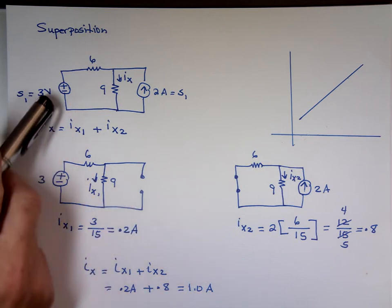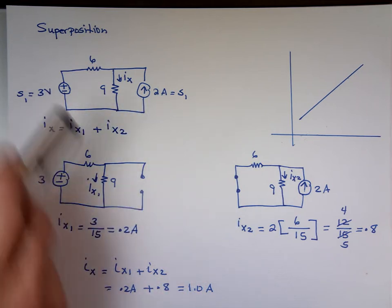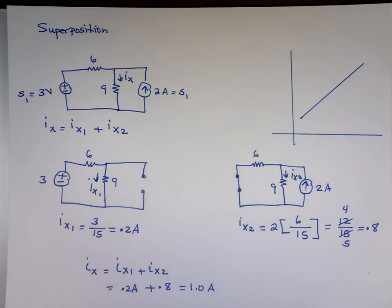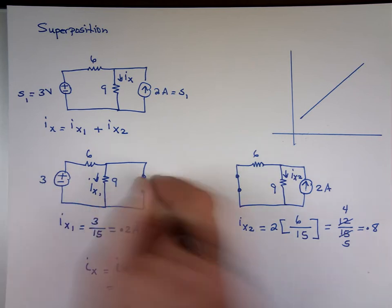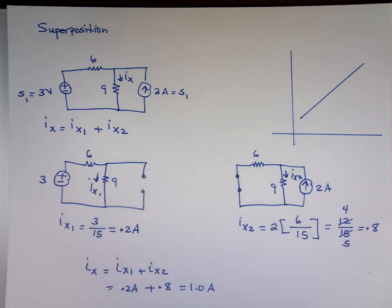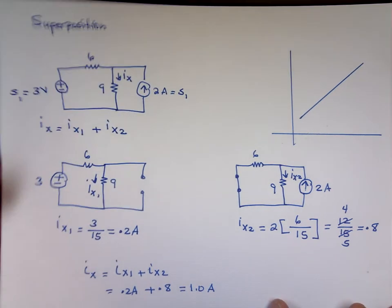Again, to kill a current source you make it an open circuit. To kill a voltage source you make it a short circuit. And you'll find whatever you're looking for, if it's current voltage due to source 1, due to source 2, due to source 3, and you add them. Let me try another one. Another example.